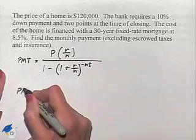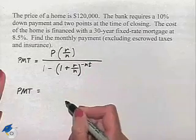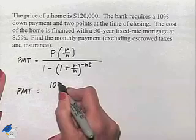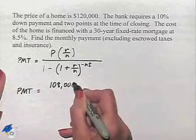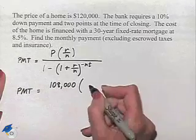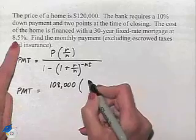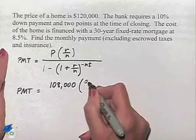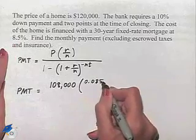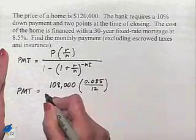We're going to substitute for P the amount we're financing, which is $108,000. We're going to multiply that times R, which is our percentage written as a decimal, 0.085, divided by 12 since we're paying monthly payments.